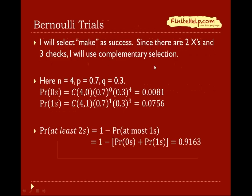I select 'make' as success. There are 2 failing cases and 3 working cases, so I'll use the complementary approach: take 1 minus the probability of making at most 1 shot. Here n equals 4, p equals 0.7, and q equals 0.3. The probability of 0 successes is C(4,0) times 0.7 to the 0 times 0.3 to the 4th. The probability of 1 success is C(4,1) times 0.7 to the 1st times 0.3 to the 3rd. So the probability of at least 2 successes equals 1 minus P(0) minus P(1), which comes out to be 0.9163.